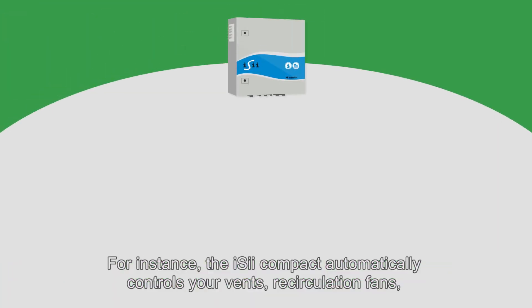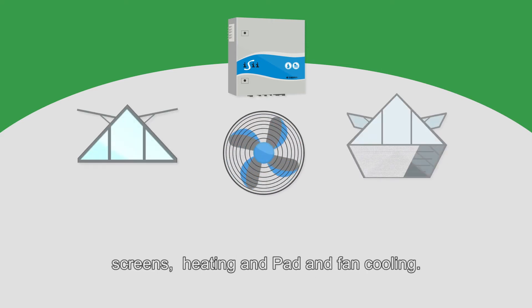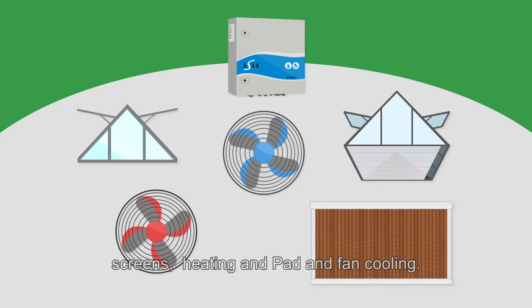For instance, the Easy Compact automatically controls your vents, recirculation fans, screens, heating and pad and fan cooling.